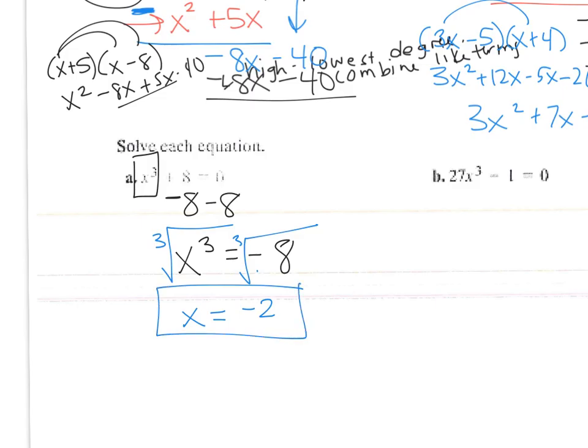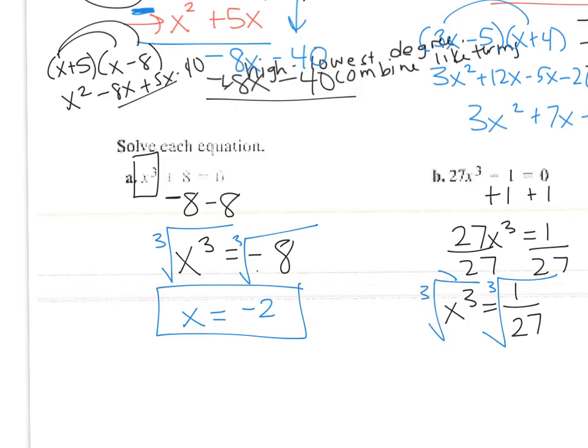And then the next part, add 1, add 1. 27x cubed equals 1, divide by 27. So x cubed equals 1 over 27. Then you take the cube root. So x equals the cube root of 1 over 27.